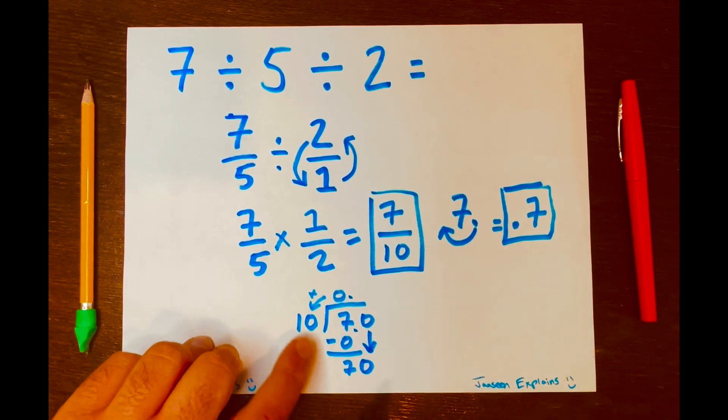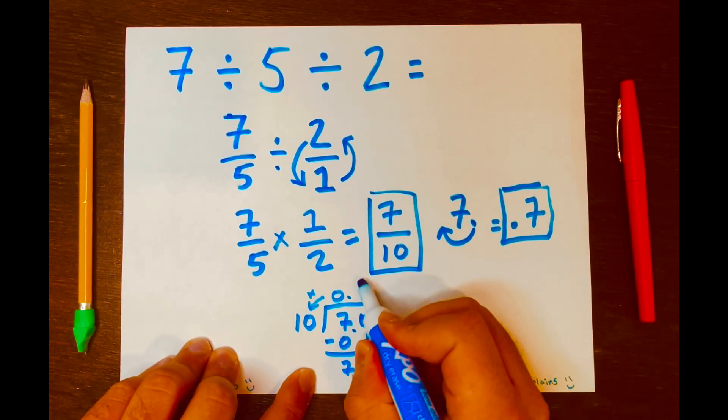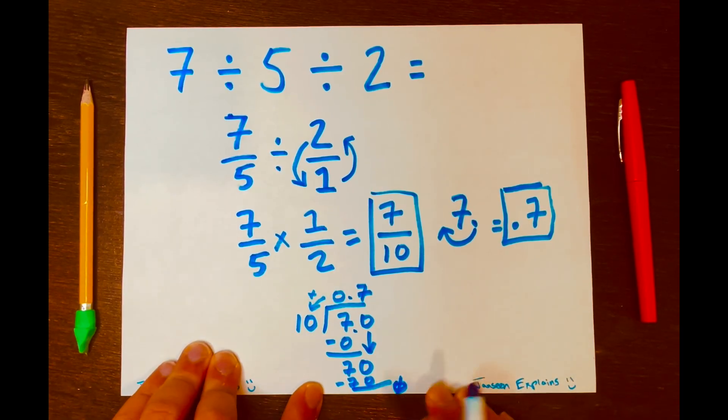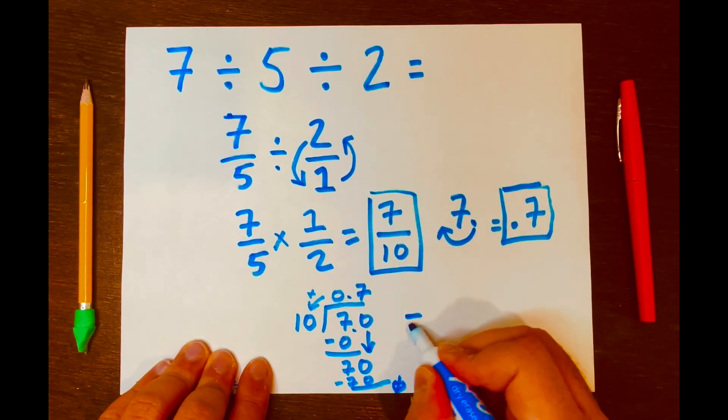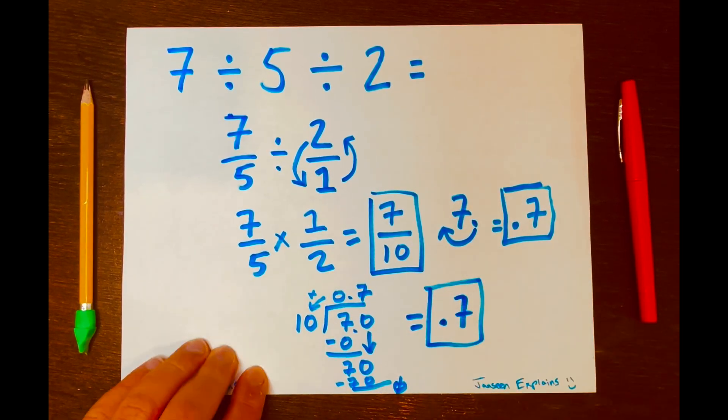And how many times can 10 fit into 70? 7 times. 7 times 10 is 70. And 70 minus 70 equals 0. I ran out of space there, but you know it's 0. So your decimal answer is 0.7. And there you go.